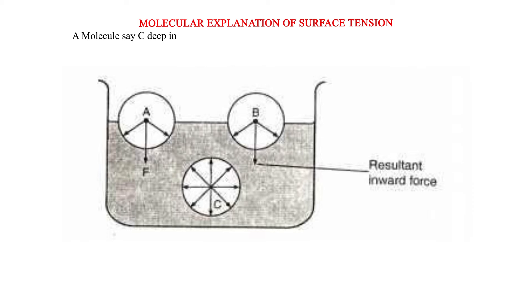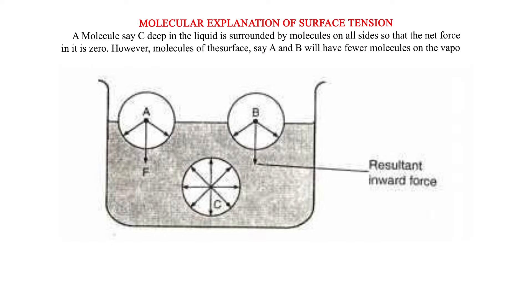Molecular explanation of surface tension. A molecule, say C, deep in the liquid is surrounded by molecules on all sides so that the net force in it is zero. However, molecules at the surface, say A and B, will have fewer molecules on the vapor side and hence will experience a resultant inward force causing the surface of the liquid to be in tension.